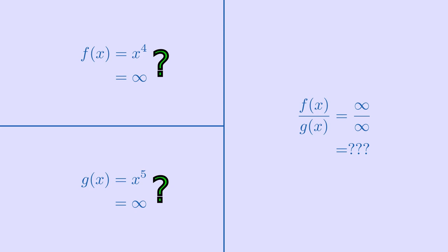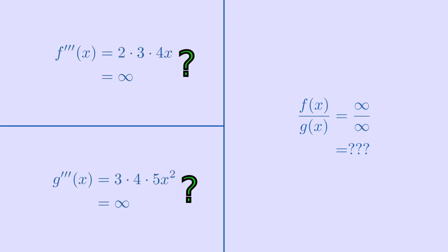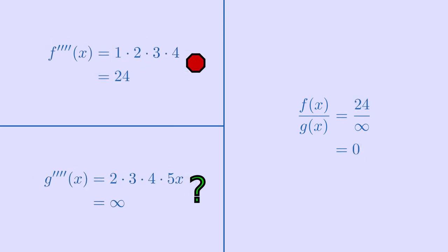Let's start off with both f and g being polynomials. Say f of x is x to the fourth and g of x is x to the fifth. This is indeterminate, so we can apply the rule and take the derivatives of both functions, knowing that their ratio is still the same as the original indeterminate ratio. In this case, the ratio is still indeterminate, so we keep differentiating the top and the bottom until one of the functions is ground down to a constant.